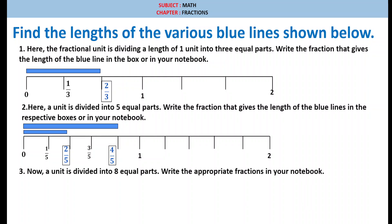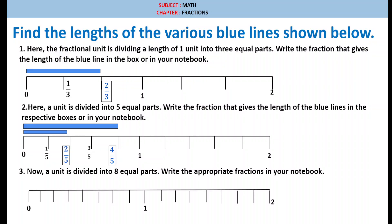Third one. Now, a unit is divided into 8 equal parts. So 1 by 8 is the first part, second one is 2 by 8, then 3 by 8, 4 by 8, 5 by 8, 6 by 8, 7 by 8, and 1.